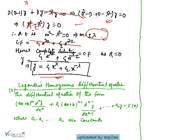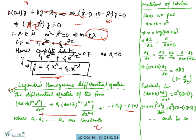The second form is Legendre's homogeneous differential equation, also called the Euler-Cauchy type. The method of solution is to substitute (ax + b) = e^z, which implies z = log(ax + b).